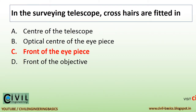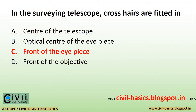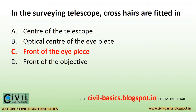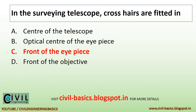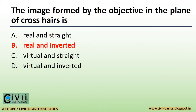In the Surveying Telescope, crosshairs are fitted in front of the eyepiece. The image formed by the objective and the plane of crosshairs is real and inverted.